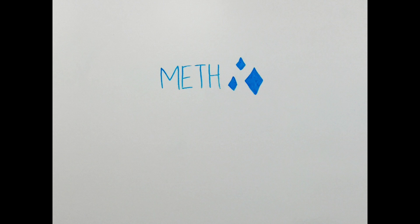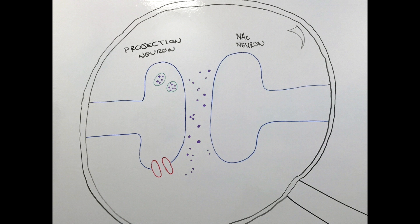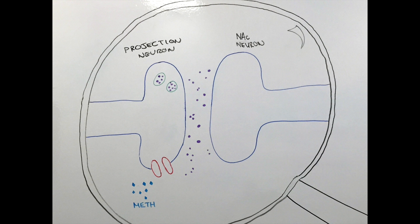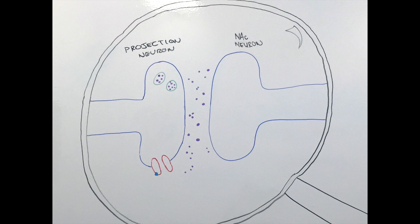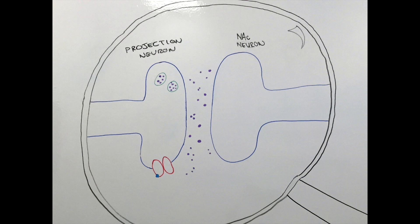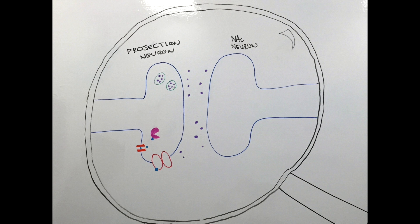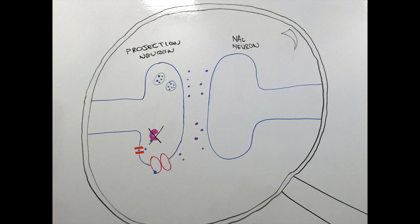How does this relate to meth use, you ask? Well, when you take meth, the dopamine pathway we just described is altered. Meth attaches to the dopamine active transporter, the DAT, preventing it from performing its function. It also prevents the monoamine oxidase from breaking down the dopamine.